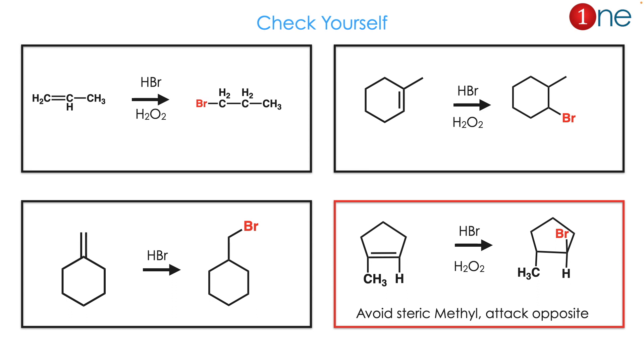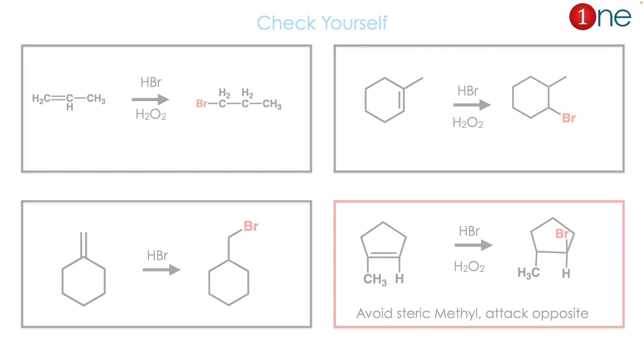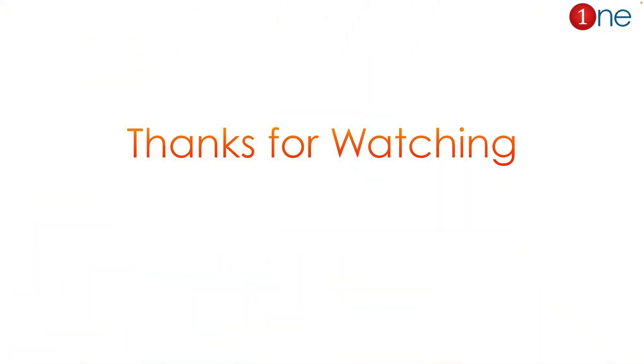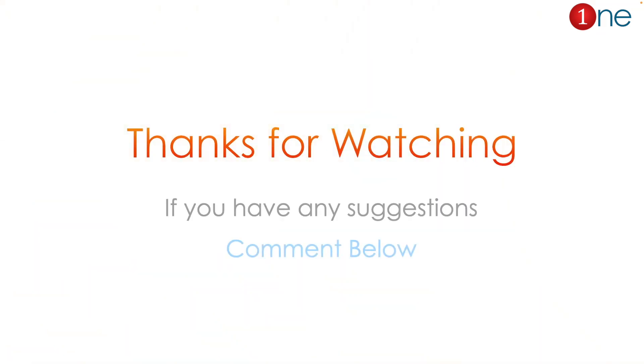The last example is interesting. Even though bromine can add in a cis or trans manner, here the reaction happens at the less substituted side and you get the trans product. That's all from this video — thanks for watching.